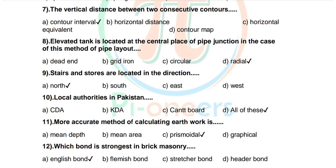Question 11: More accurate method of calculating earthwork. Options: mean depth, mean area, prismoidal, graphical. Correct answer is prismoidal. Question 12: Which bond is strongest in brick masonry? Options: English bond, Flemish bond, stretcher bond, header bond. Correct answer is English bond.